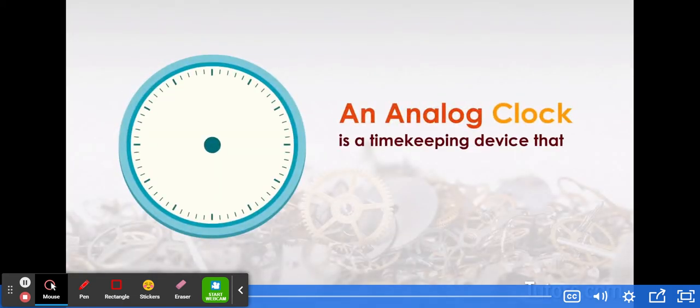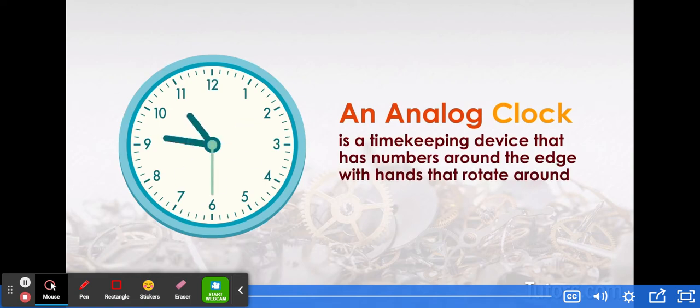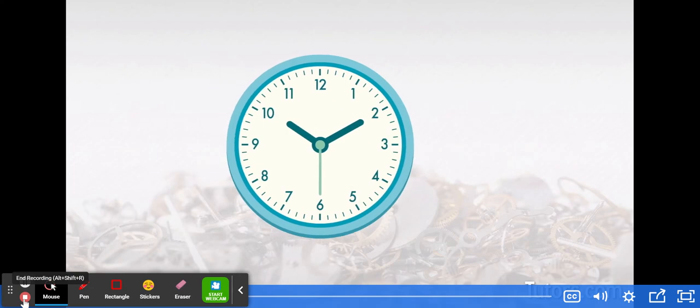An analog clock is a timekeeping device that has numbers around the edge with hands that rotate around to indicate the time. To tell time on an analog clock you look at where the hands are pointing.